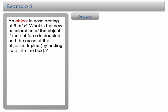Example 2: A box is accelerating at 6 m per second square. What is the new acceleration of the object if the net force is triple and the mass of the object is double?